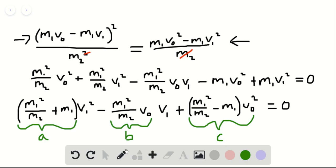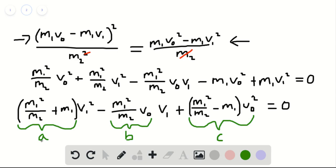If we go to our quadratic formula, we have V1 is equal to negative B plus or minus the square root of B squared minus 4 times A times C, all divided by 2 times A. Our A is M1 squared divided by M2 plus M1, our B is M1 squared divided by M2 times V0, and our C is M1 squared divided by M2 minus M1 times V0 squared.